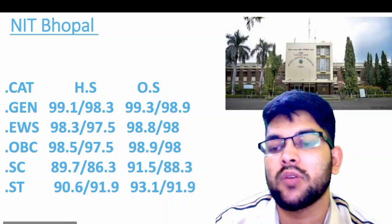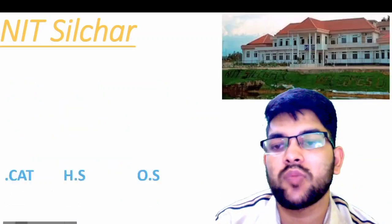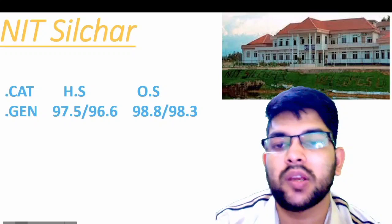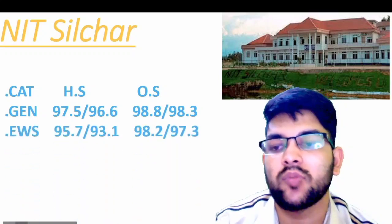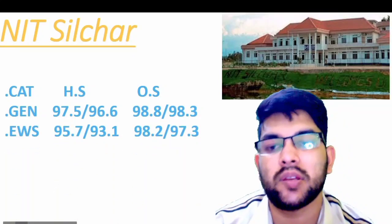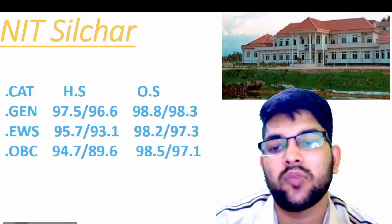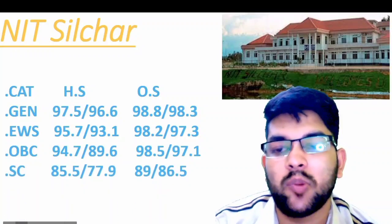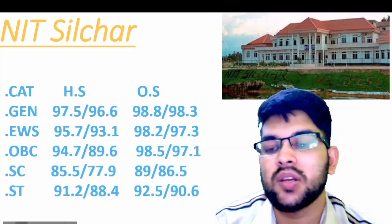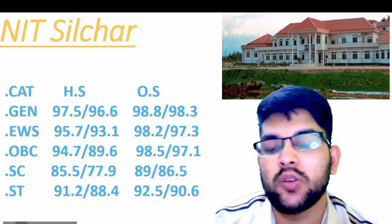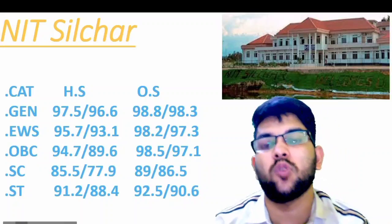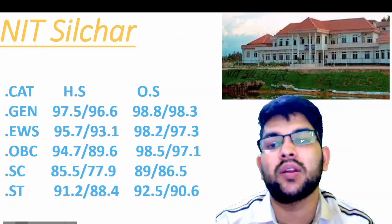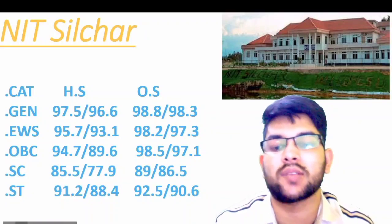Next is NIT Silchar. Here is the information: for General home state 97.5, other state 98.8. For EWS: 95.7 and 98.2. For OBC: 94.7 and 98.5. For SC: 85.8 and 89. For ST: 91.2 and 92.5 percentile — that is for home state and other state male candidate; for female you can check after the slash.